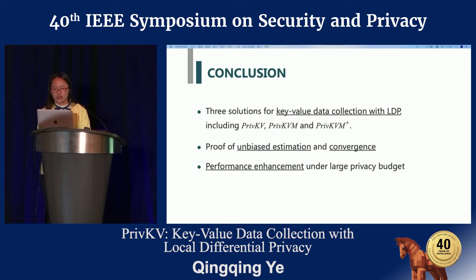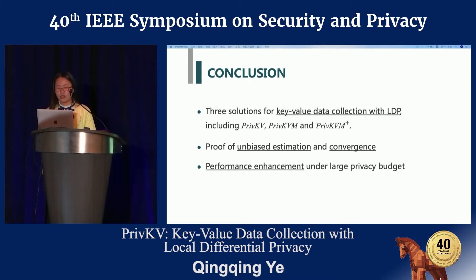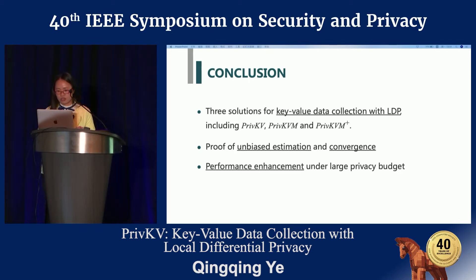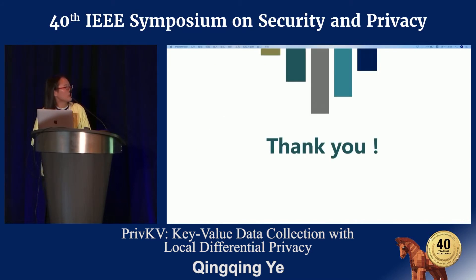Here is our conclusion. We propose three solutions for key-value data collection with local differential privacy and compare these three approaches in terms of estimation accuracy and communication bandwidth. We theoretically prove the estimation is unbiased and always converges to the ground truth. We also optimize our solutions to further improve performance under a large privacy budget. That's all. Thank you.